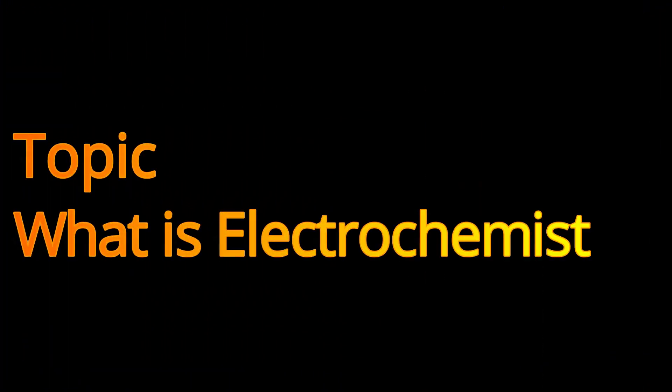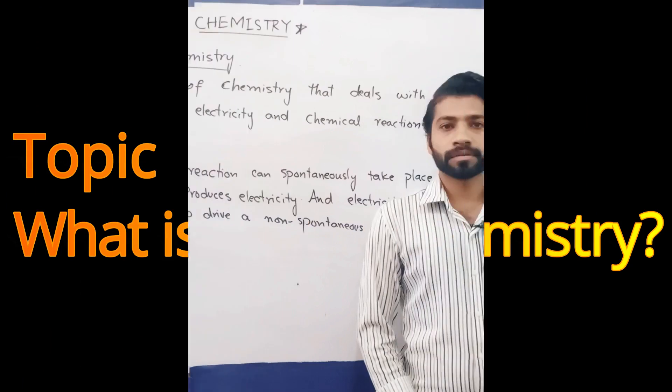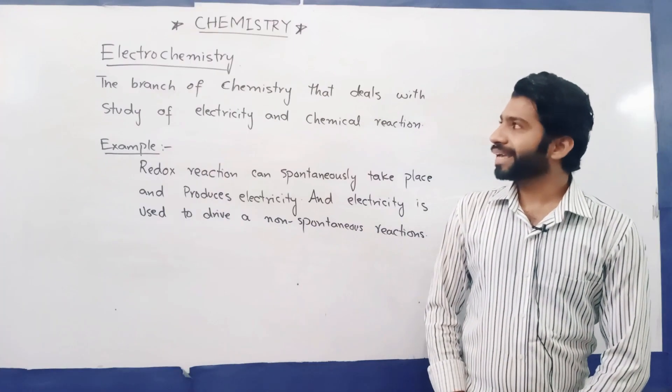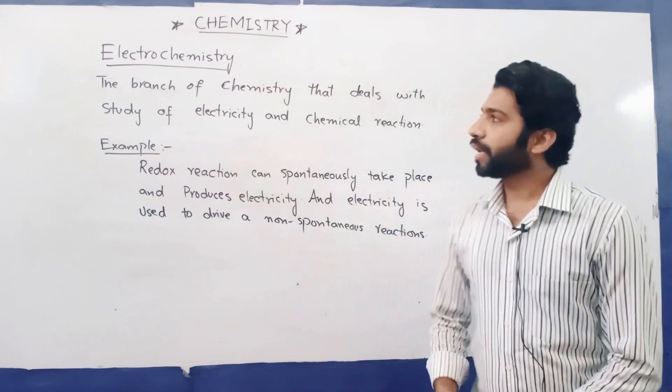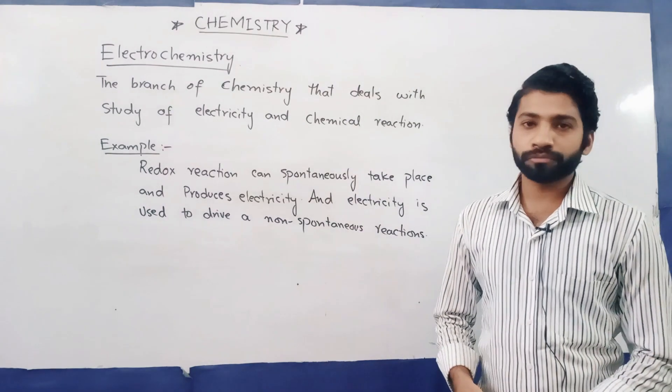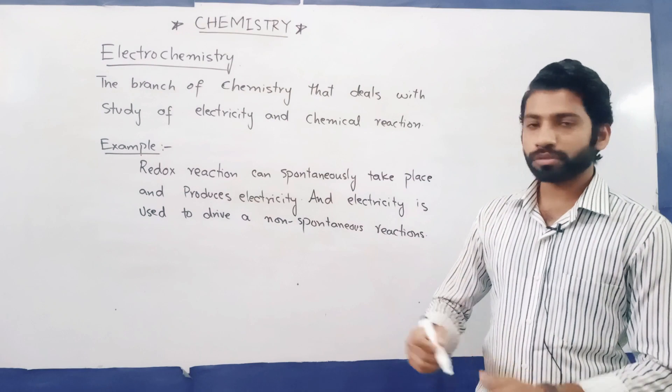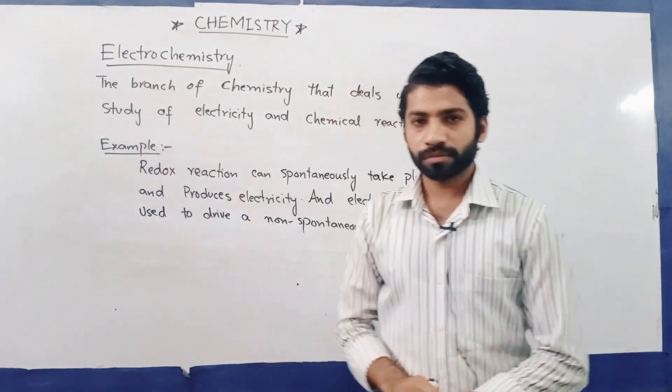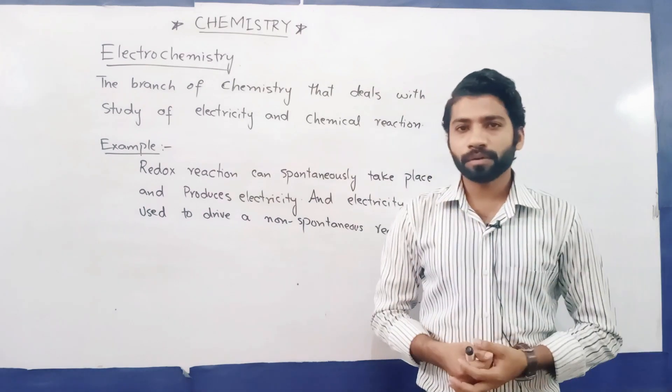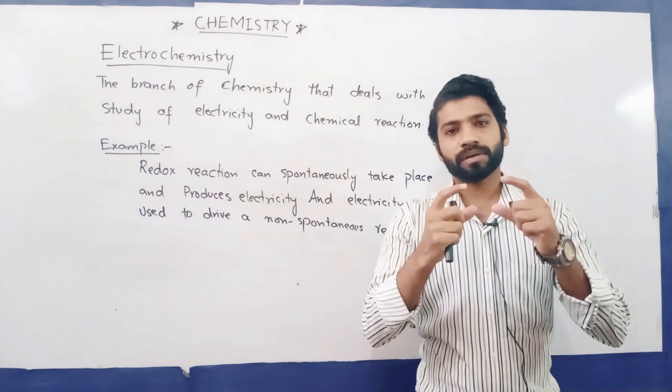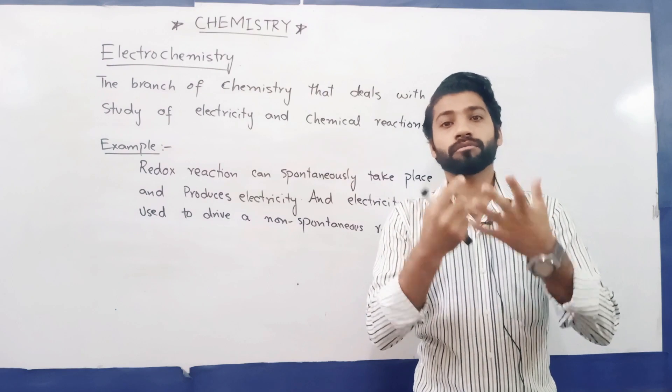So today we are going to start electrochemistry. What is electrochemistry? Electrochemistry is a combination of two words: electro means electrons and chemistry means chemical reactions. This means that in electrochemistry we have electrons involved.